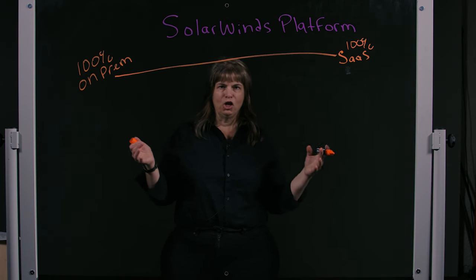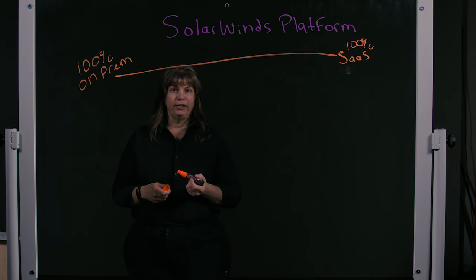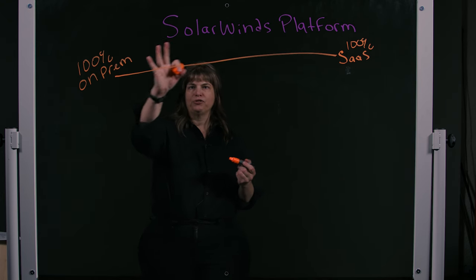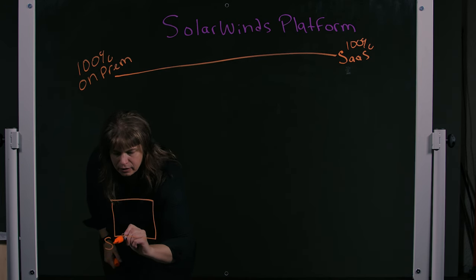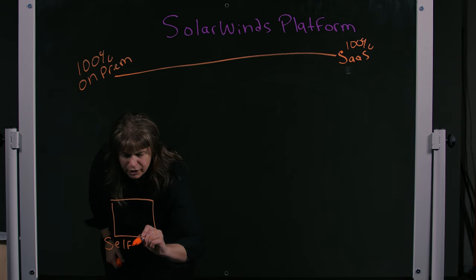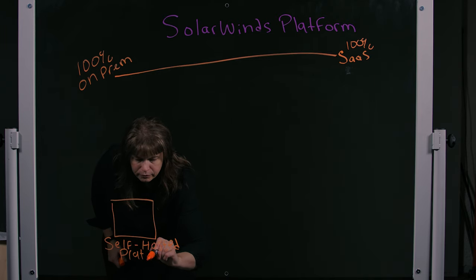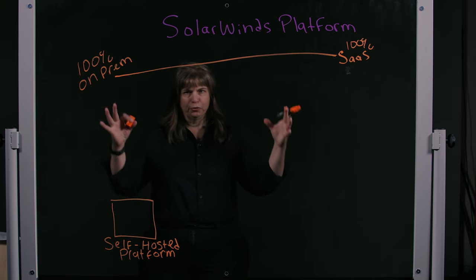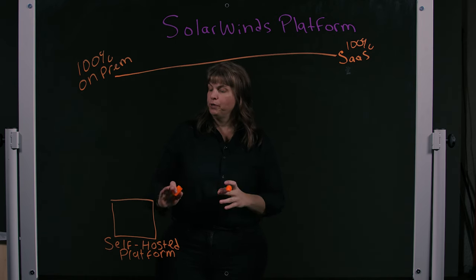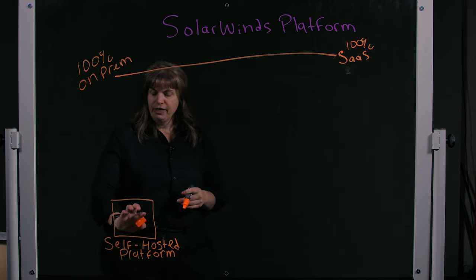So how do we satisfy the needs of all of our customers? The SolarWinds platform itself we used for a long time to describe what we call the Orion platform, which was an infrastructure that satisfies customers on this side of the spectrum. We still have that — we call that the self-hosted platform component. Whether you run SolarWinds product modules or our newer products such as Hybrid Cloud Observability, they run on this platform.